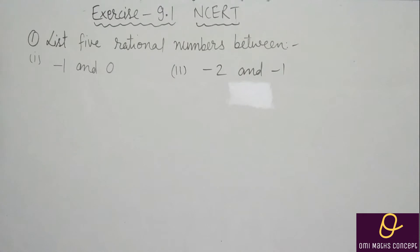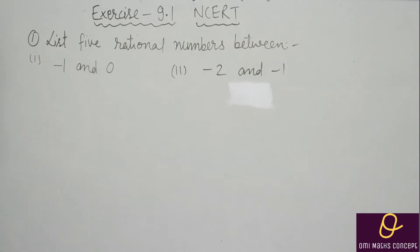Rational numbers are those numbers which can be denoted in the form of p by q. Means, jin numbers ko p by q ki form mein numerator aur denominator ki form mein denote kar sakte ho, woh rational numbers hote hain, jis mein denominator zero nahin hona chahiye. Jo numerator aur denominator ki form mein denote kar sakte ho.